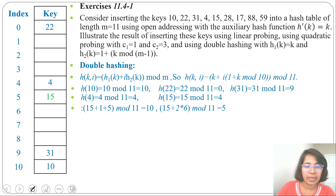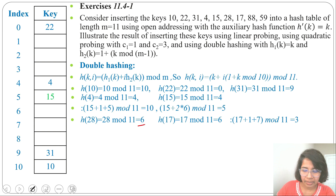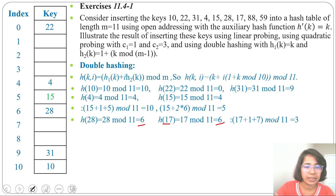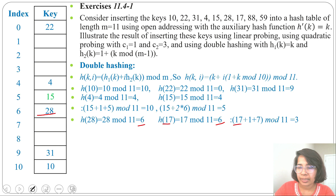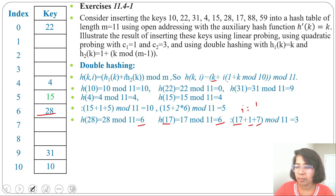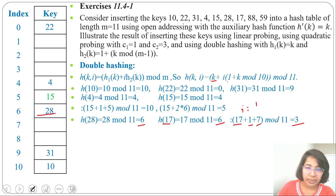Next, key 28: 28 mod 11 = 6, insert 28 at slot 6. Next, key 17: 17 mod 11 = 6, but slot 6 is already filled. For i = 1: (17 + 1 * (1 + 17 mod 10)) mod 11 = (17 + 1 * (1 + 7)) mod 11 = (17 + 8) mod 11 = 25 mod 11 = 3. Slot 3 is empty, insert 17 at slot 3.